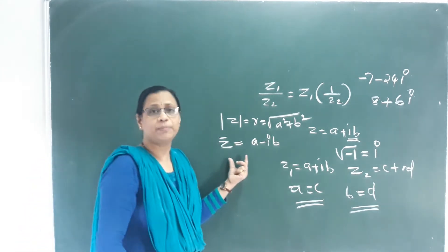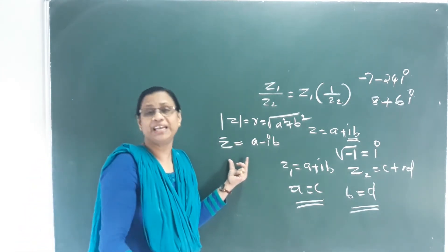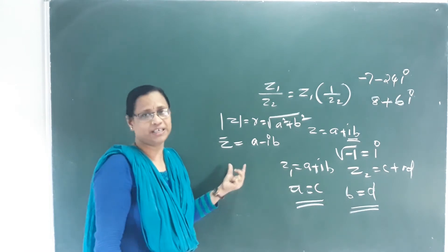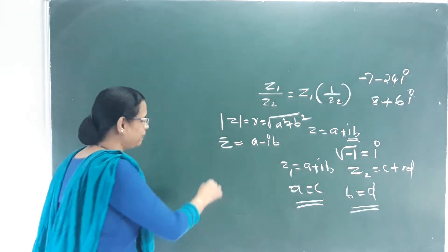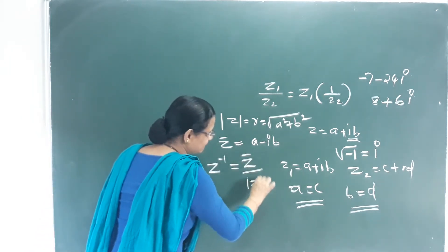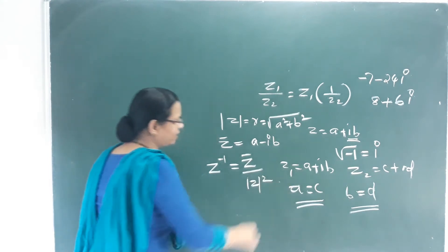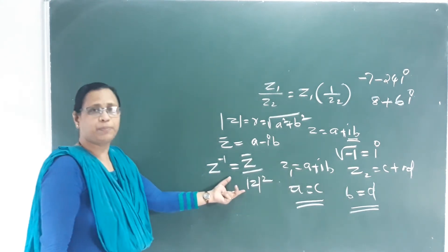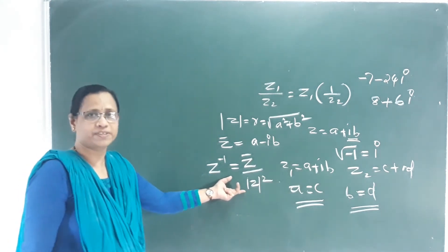The next topic is Multiplicative Inverse. The multiplicative inverse is Z-bar divided by modulus Z squared — that is the multiplicative inverse.